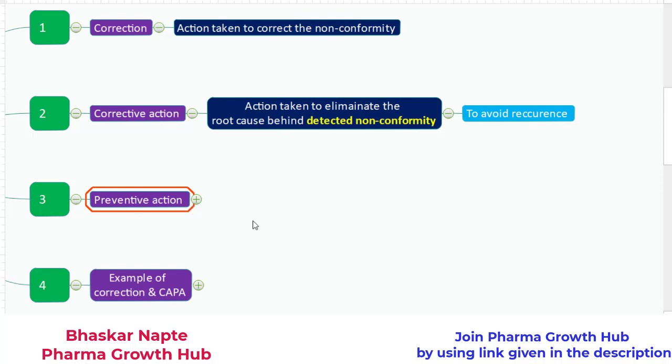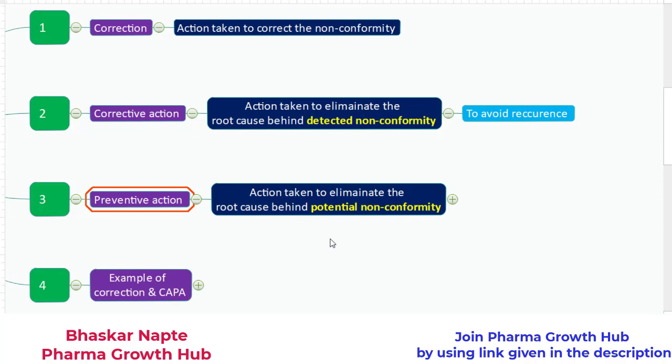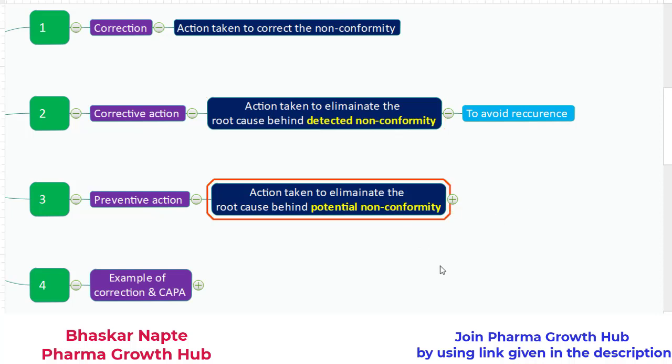The third term is preventive action. Preventive action is nothing but an action taken to eliminate the root cause behind a potential non-conformity. The word 'potential' is very important here. As part of the investigation of the column leak, let us say you identified that the column got leaked because of accumulation of undissolved particles inside the mobile phase — so the mobile phase was the root cause. But what are the other potential reasons for such kind of column leakage or column block? Unfiltered mobile phase is not the only reason.